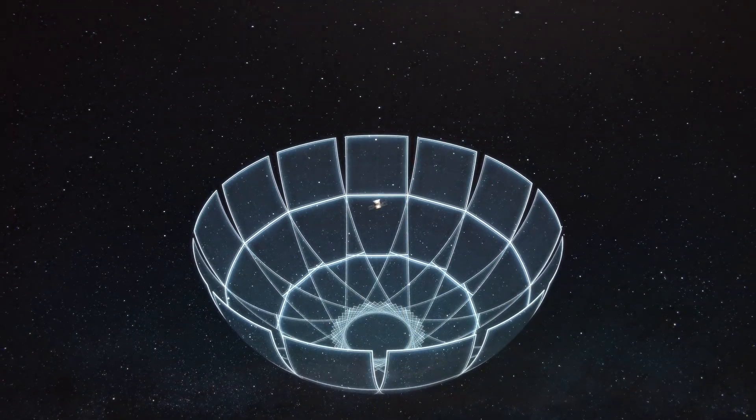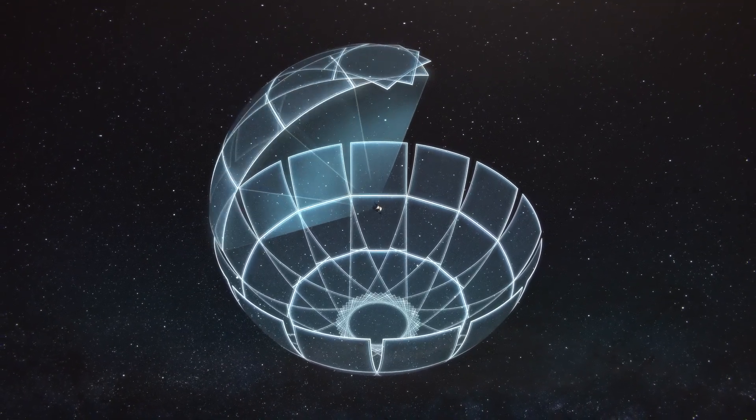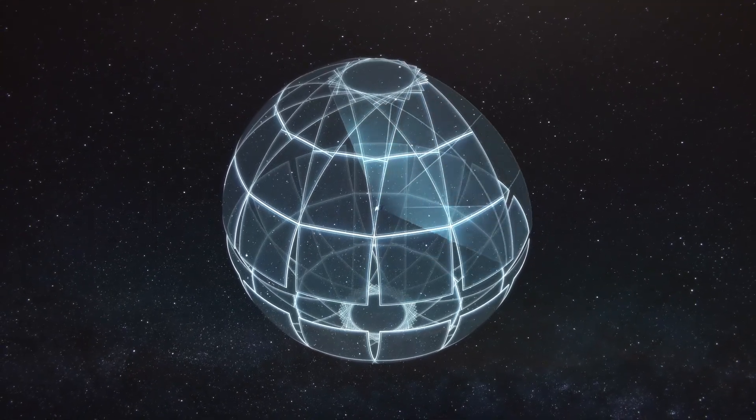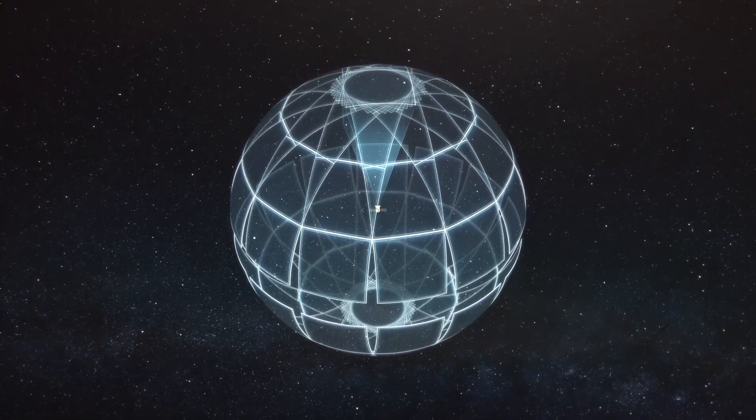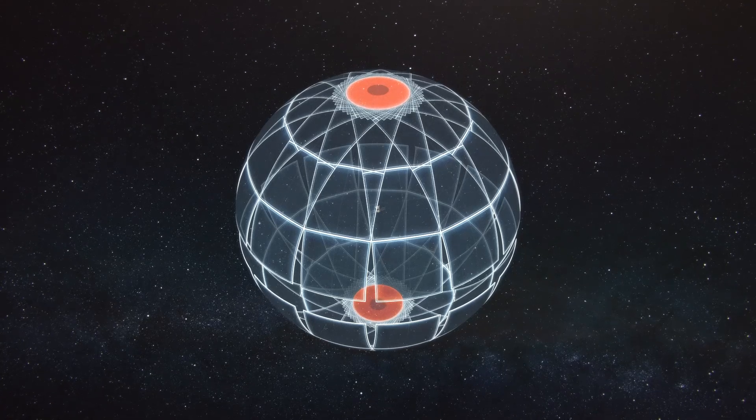TESS has now turned around, marking the halfway point of its primary science mission, and is observing the northern sky using this same strategy. As it does, astronomers will continue to sift through roughly 20 terabytes of data from the southern hemisphere, as well as the new incoming information.